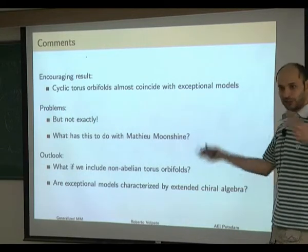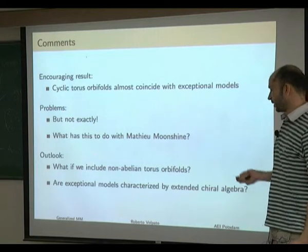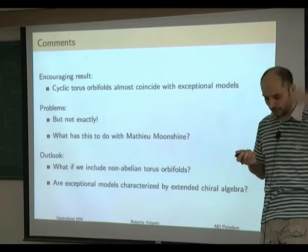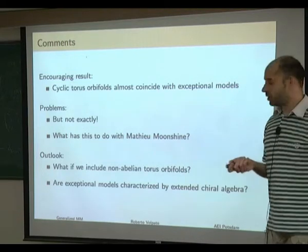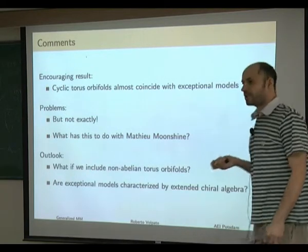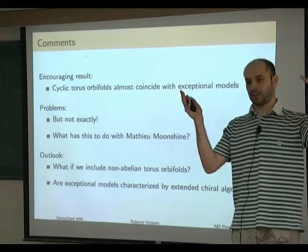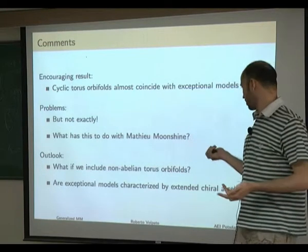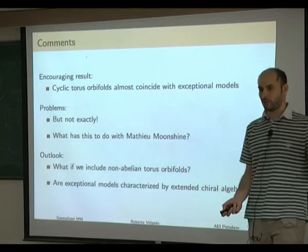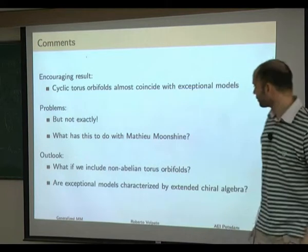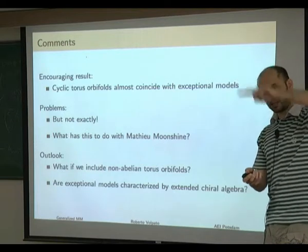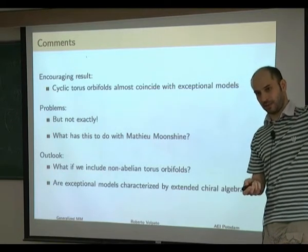What does this tell us about Mathieu Moonshine? The best argument is the following. We know that all orbifolds of torus models contain some extended chiral algebra — the chiral algebra of these models is not just the N=4 superconformal algebra but is slightly larger, containing at least one more current. These additional holomorphic fields appear via spectral flow in the elliptic genus, contributing with minus signs.